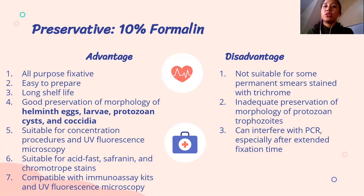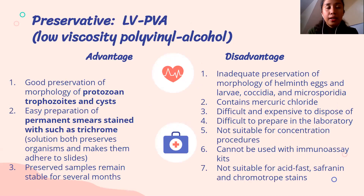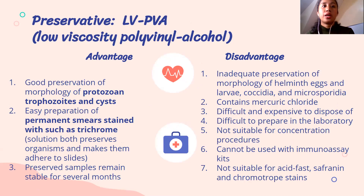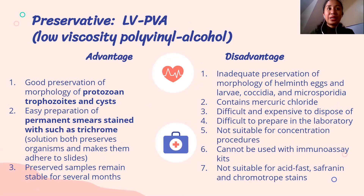PVA — low-viscosity polyvinyl alcohol — is good for trophozoites and permanent smears. MIF (merthiolate-iodine-formalin) is good for field surveys and concentration techniques, though iodine may cause distortion of protozoa. Schaudinn's fixative is good for trophozoites and cysts and easy for permanent smears, but contains mercuric chloride, which is harmful to the environment. SAF (sodium acetate-acetic acid-formalin) has a long shelf life, works with acid-fast and chromotrope stains, and has no mercury. Modified PVA with zinc is preferred as it also has no mercuric chloride.